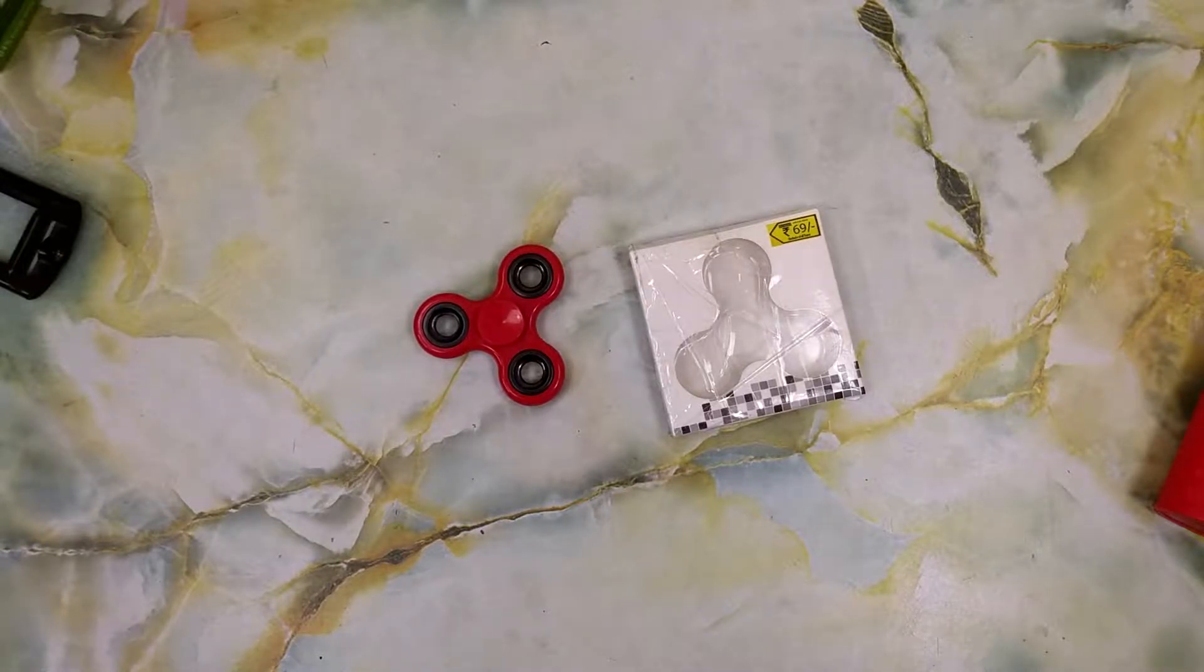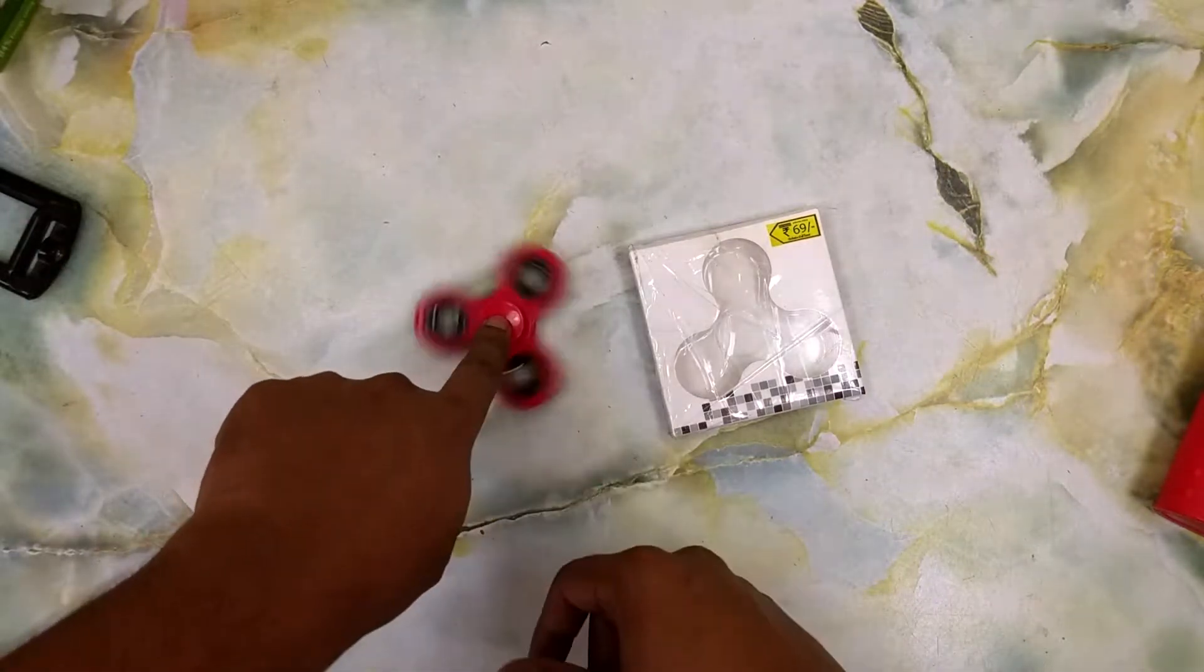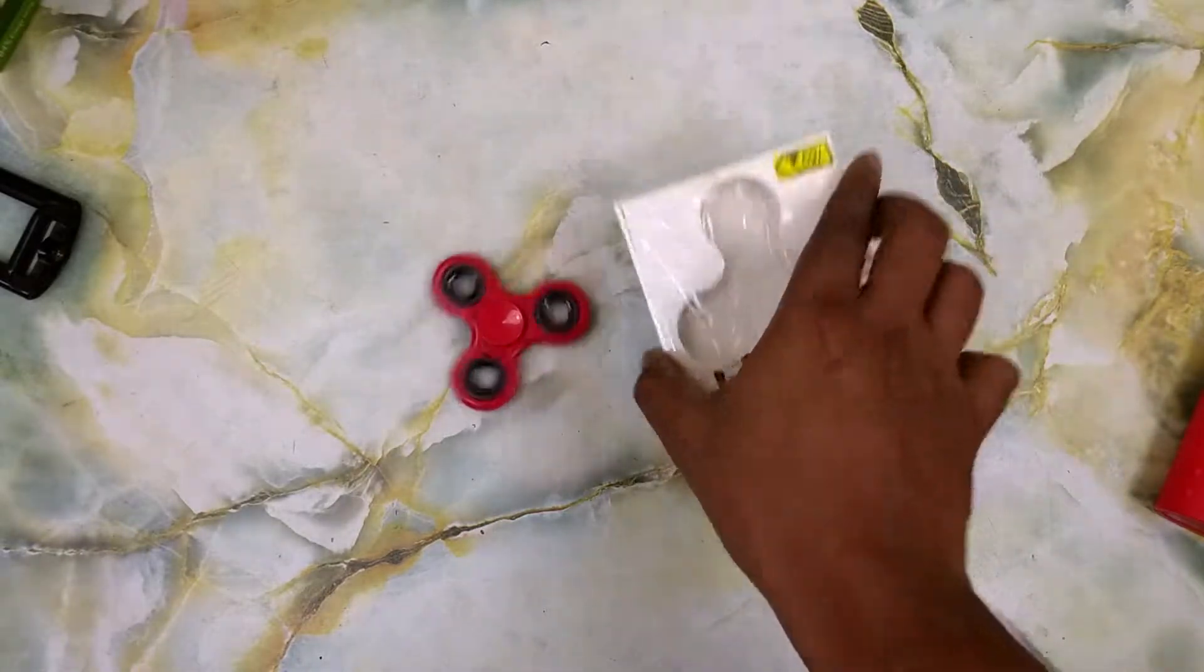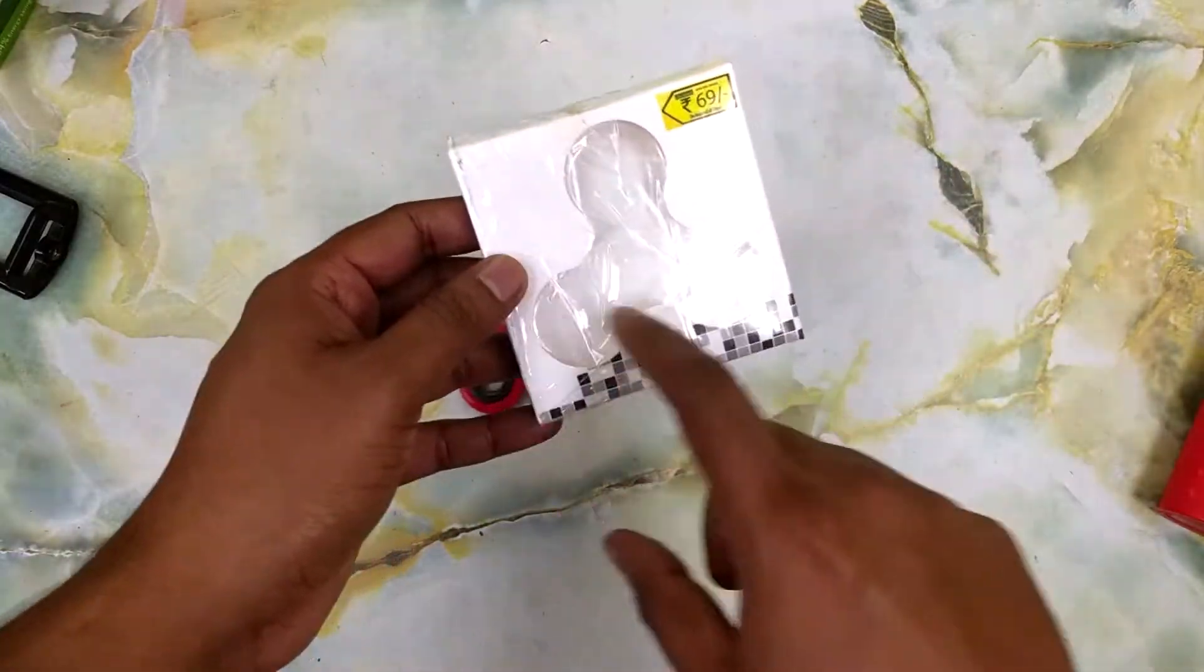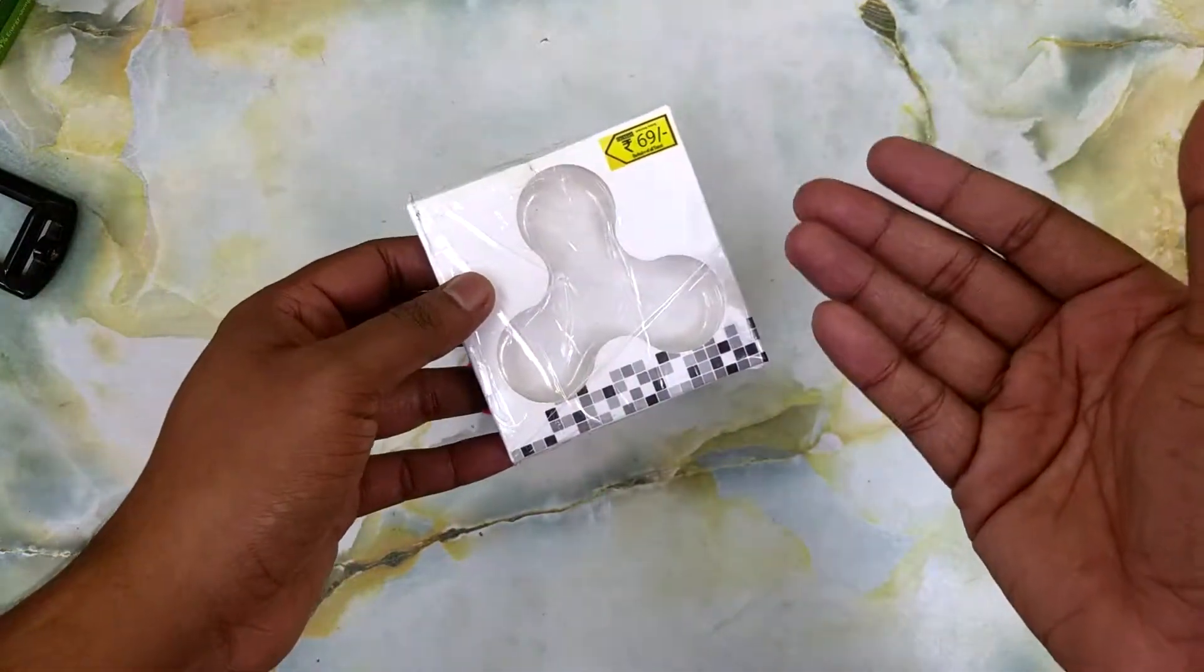Hey guys, welcome to another episode of Product Talk. Today I have with me a fidget spinner, and I bought it from DMART. Let's take a look at the packaging first. You can see a lot of tape around the packaging here. This is because they don't want you to open the pack right in the store and start fidgeting with it.